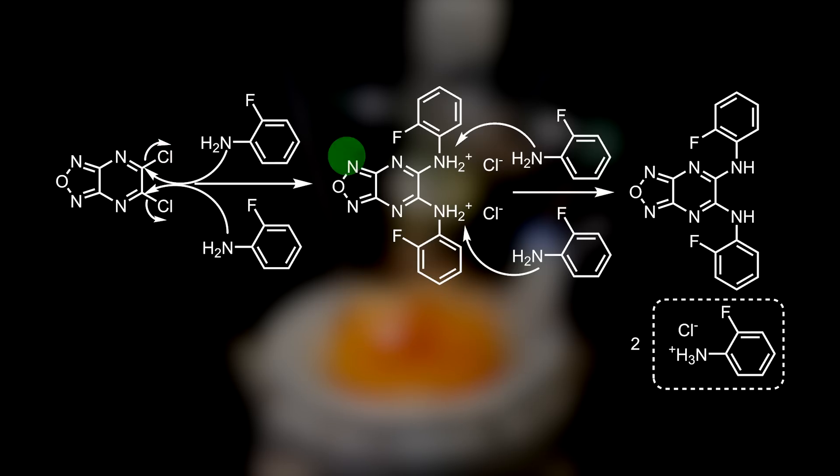Another 2-fluoroaniline molecule, which is a base, picks out the remaining proton and chloride from the protonated intermediate to form 2-fluoroaniline hydrochloride, which precipitates out of solution as a white solid. We are then left with BAM-15 as the final product, which is a yellow solid that will stay dissolved at this temperature.